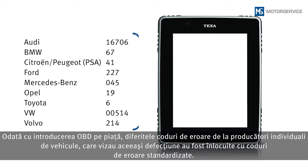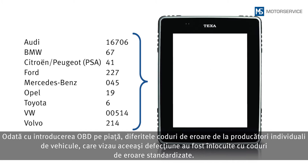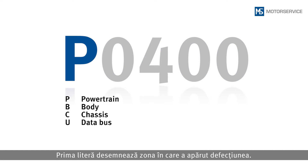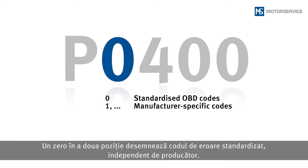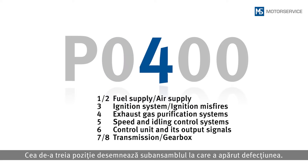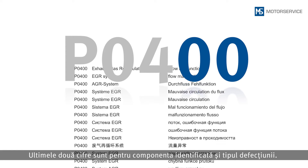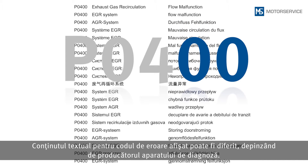With the introduction of OBD, the various DTCs used by individual vehicle manufacturers for just one error were replaced by standardized DTCs. The first letter indicates the area in which the error has occurred — errors on components related to emission control are indicated by a P for powertrain. A zero in the second position indicates the standardized DTCs independent of the manufacturers. The third position indicates the assembly group of the error, and the last two digits stand for the detected component and the type of error. The wording of the text used for a DTC may vary depending on the scan tool manufacturer.